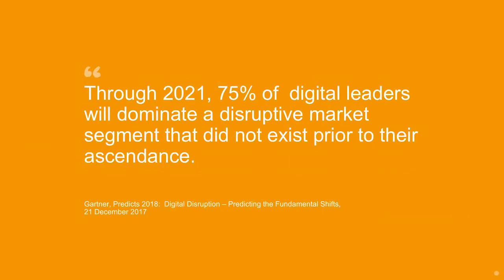Here's a quote from Gartner: through 2021, 75% of digital leaders will dominate a disruptive market segment that did not exist prior to their ascendance. So global online TV channels — that's Netflix — and ride sharing, with companies like Uber and Lyft. These are new markets that didn't really exist before they came along.